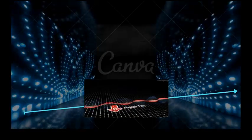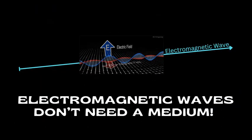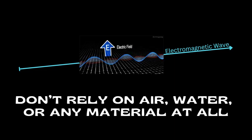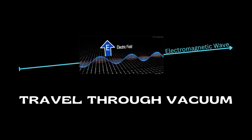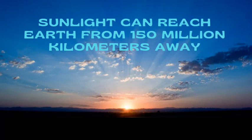But here is the best part. Unlike sound waves or water waves, electromagnetic waves don't need a medium to travel through. They don't rely on air, water, or any material at all. Instead, they can travel through the vacuum of space, carrying energy across vast distances. This is why sunlight can reach Earth from 150 million kilometers away, crossing the emptiness of space.